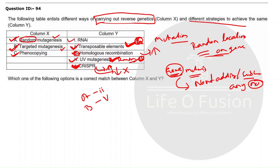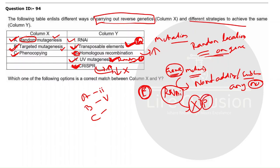For phenocopy — where an organism shows a different phenotype under different environmental conditions by changing expression of a particular gene — the method used is RNA interference (RNAi). RNAi downregulates a particular protein, thereby changing the phenotype of the cell or individual. So the correct match for phenocopy is RNAi. If you like this video, please subscribe to our channel; we'll add more videos in this PYQ series before the CSIR NET examination. Thank you everyone, and have a good day.